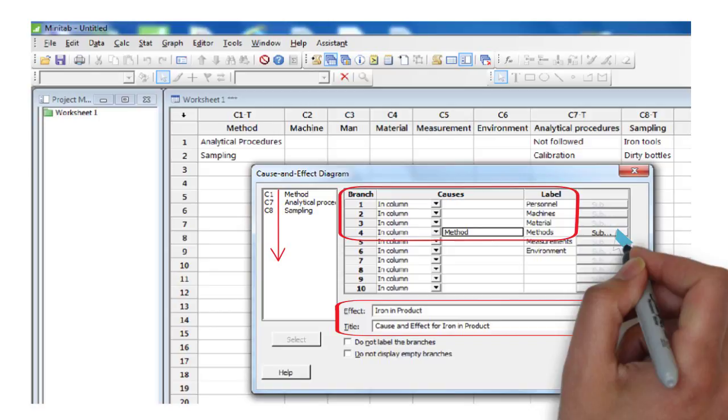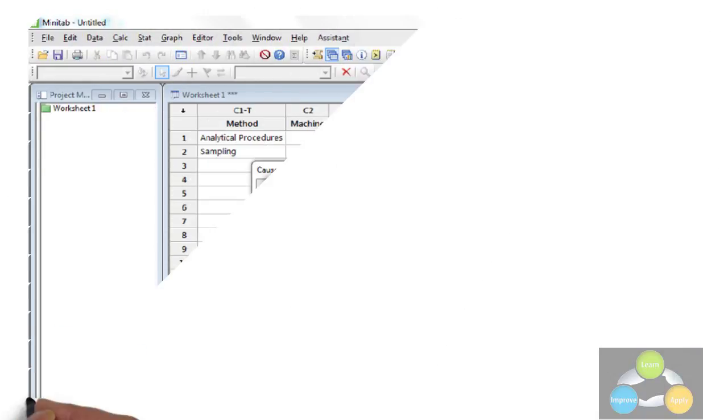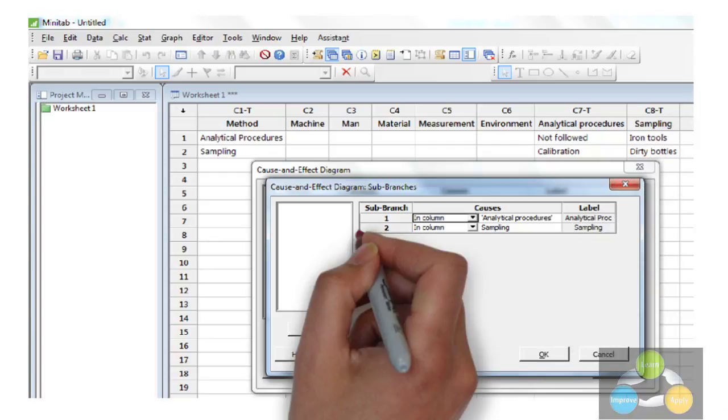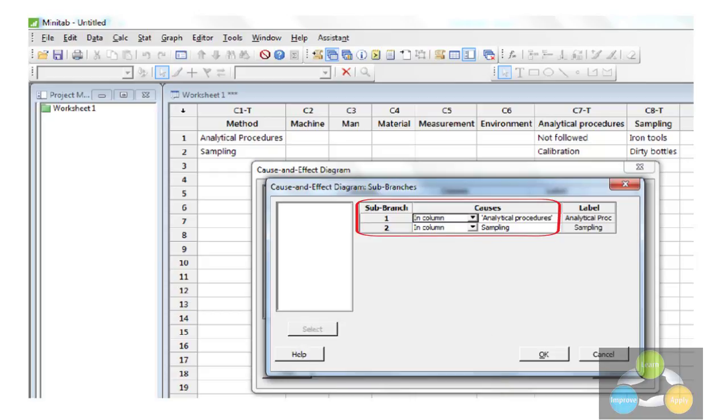Once you have entered the causes, click on the sub option to add the sub-causes. In the row of analytical procedure, select sub-branch as in column and in causes, select analytical procedures. Repeat the procedure for another main cause, sampling, from the available option at the left side.